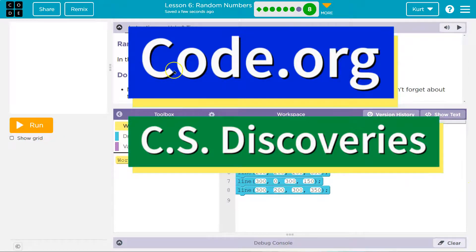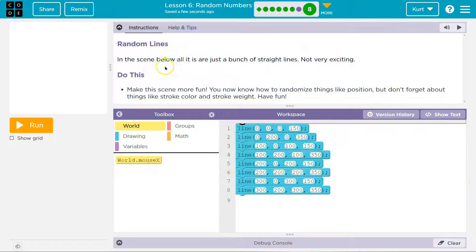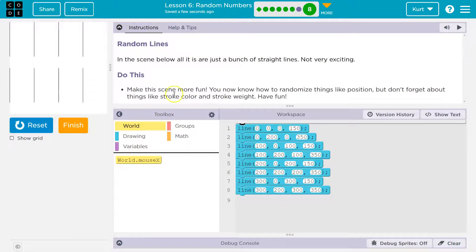This is code.org. Let's take a look at what we're doing. Random lines. In the scene below, all it is are just a bunch of straight lines. Not very exciting.